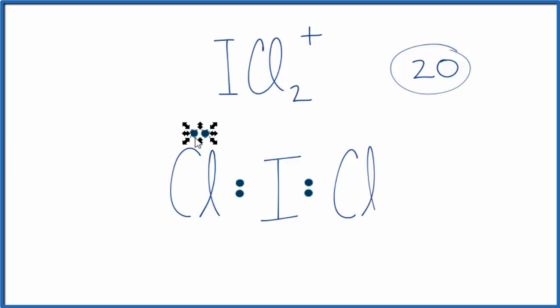Go around and complete the octet for each chlorine atom. We've used 16. We've got 4 more. Let's put them on the iodine. When we do this, everything ends up having an octet, so this is a pretty good Lewis structure.